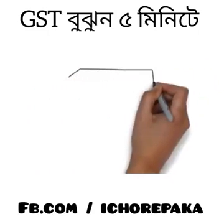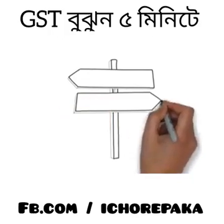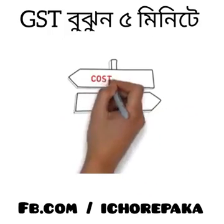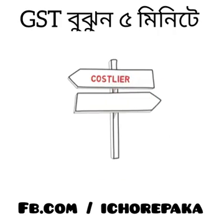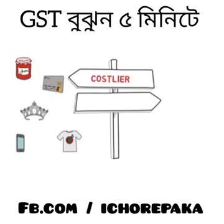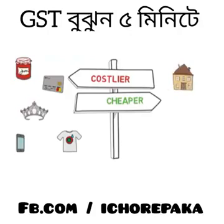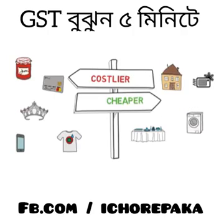After applying GST, the cost of items will increase or decrease. Items whose cost will increase include packaged food, jewelry, readymade garments, mobile services, and credit card services. Items whose cost will decrease include home, restaurant, AC, washing machine, microwave oven, small cars, and there will be less taxes on industries.